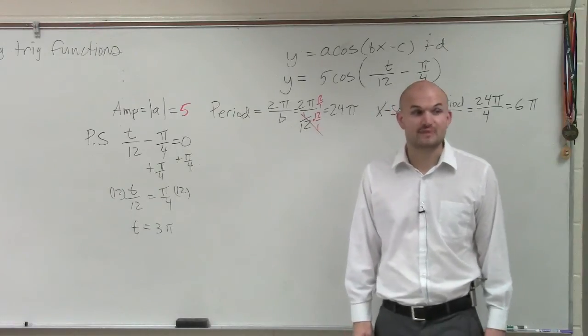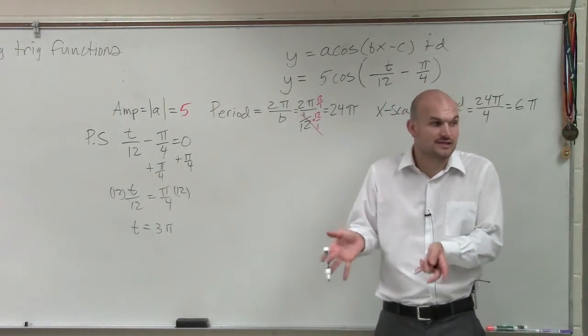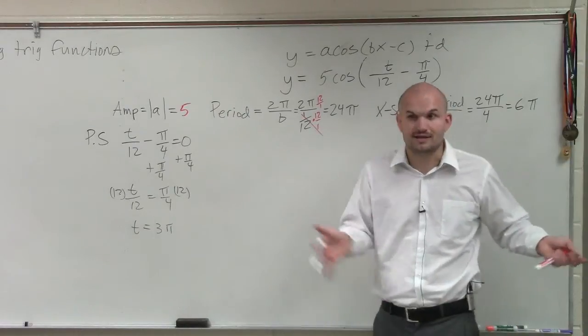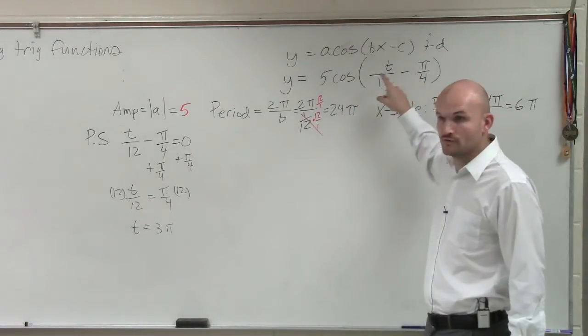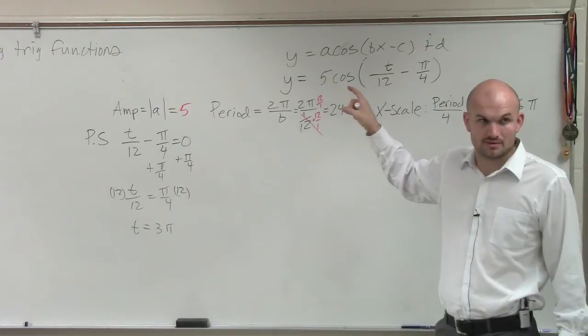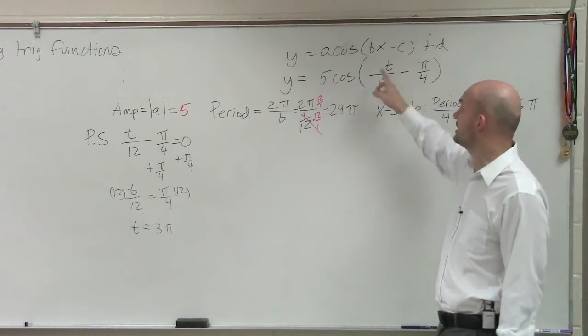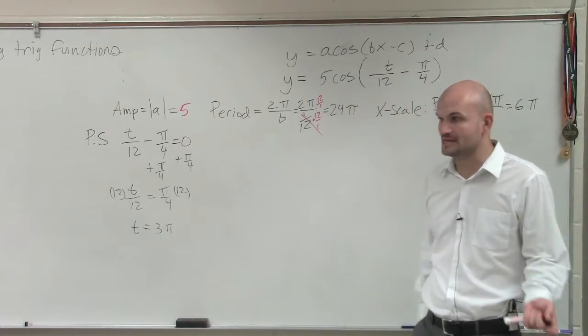So my phase shift is actually 3π. So I'm actually shifting this graph over 3π to the right, but I'm not shifting it over π/4 to the right. Sometimes that's the case, but that's only the case when b is 1. That's the only time that works.